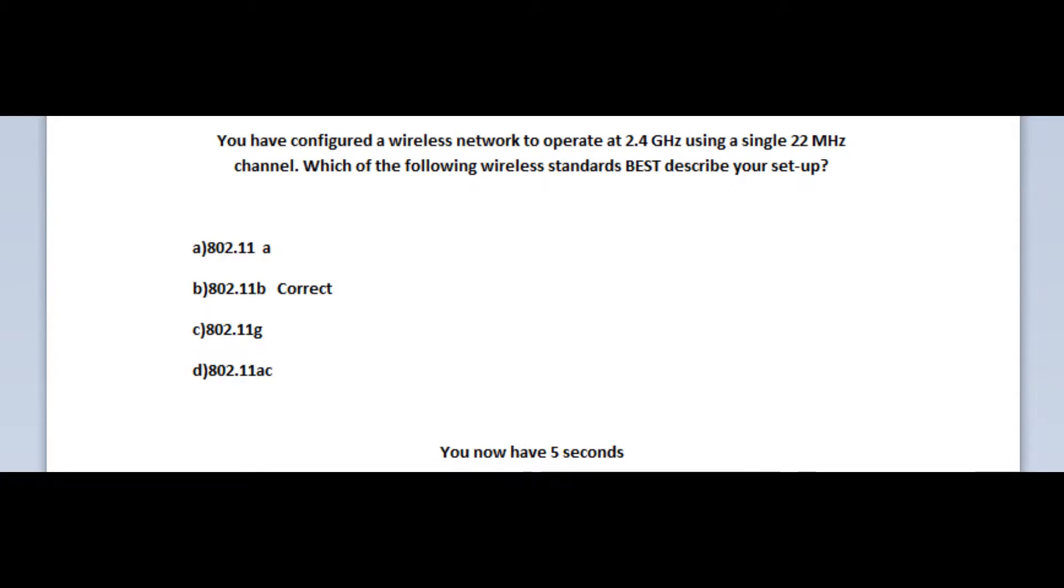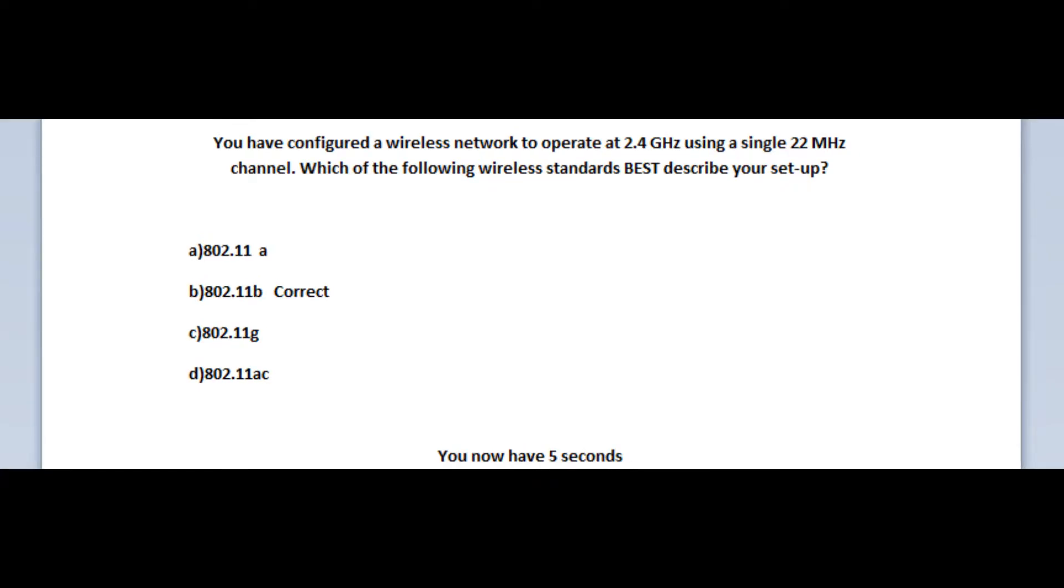Let us jump to our first question. The first question states: you have configured a wireless network to operate at 2.4 GHz using a single 22 MHz channel. Which of the following wireless standards best describes your setup? Is it A. 802.11A? Is it B. 802.11B? Is it C. 802.11G? Or is it D. 802.11AC? You now have 5 seconds.